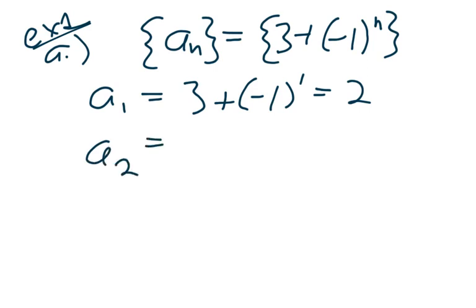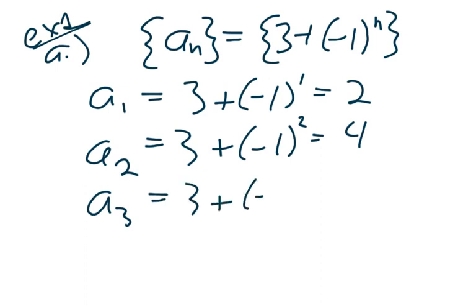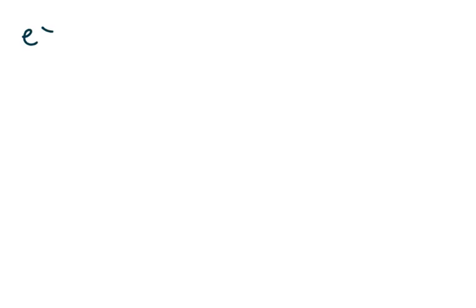a sub 2 is 3 plus negative 1 to the 2nd power, which is a positive 1, so this is 4. A sub 3 is 3 plus negative 1 cubed, which actually brings us back to 2. So this is kind of an interesting sequence. It just bounces back and forth between 2 and 4. What's interesting about this is that it doesn't converge. The big deal with sequences that we'll see is going to be whether or not they converge, and if they do, what do they converge to, and if they don't converge, then they diverge.